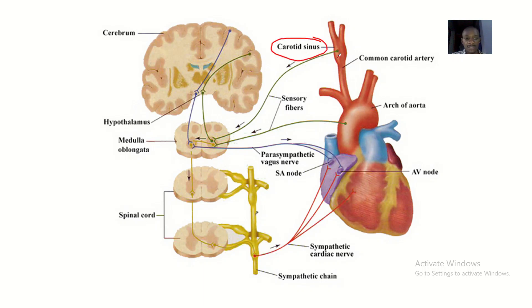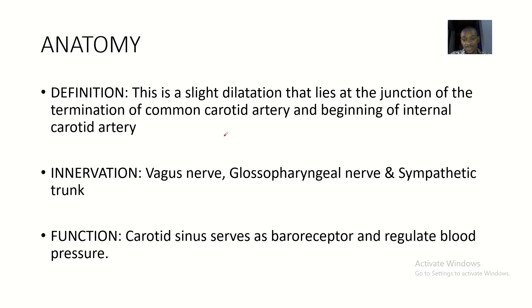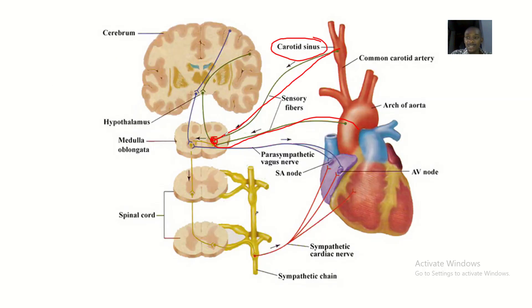The carotid sinus sends sensory fibers back into the medulla, and these sensory fibers are also related to the heart. Basically, the carotid sinus has mechanoreceptors that actually regulate pressure, regulate blood pH, regulate the oxygen level in the body, and regulate the carbon dioxide level in the body.